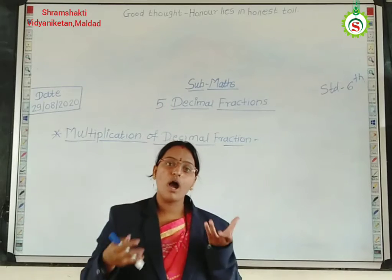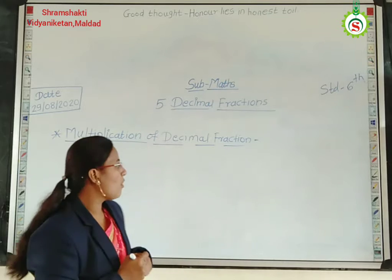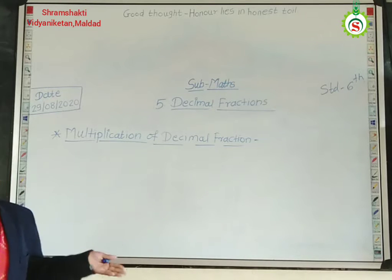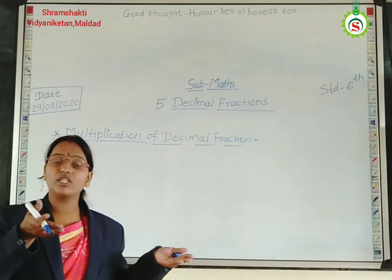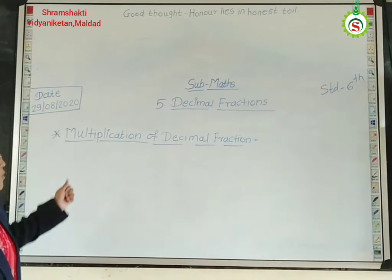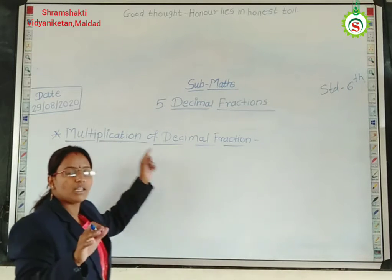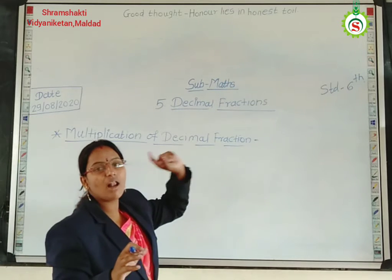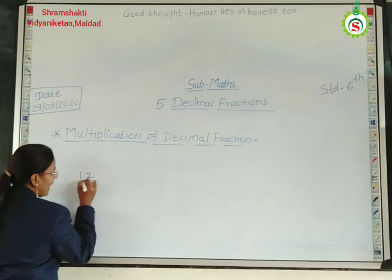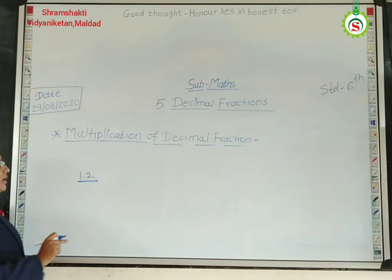We know how multiplication is carried out, how examples of multiplication are solved. You know simply the multiplication of 1 digit, 2 digit, 3 digit numbers. Also, we studied in the previous chapter the operations of fraction — in that we studied the multiplication of fraction. Now we have to solve the examples of multiplication of decimal fraction. You know what a decimal fraction is — it is a number that contains a decimal point. This is the decimal number, decimal fraction.